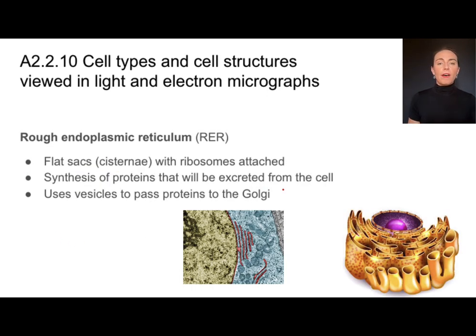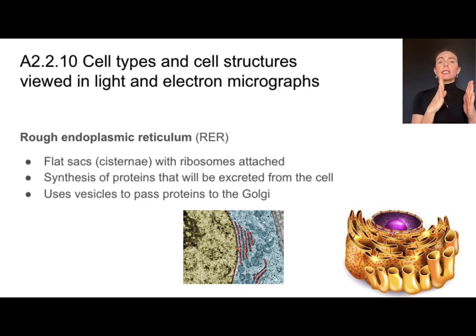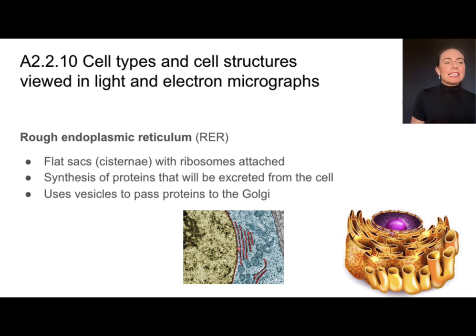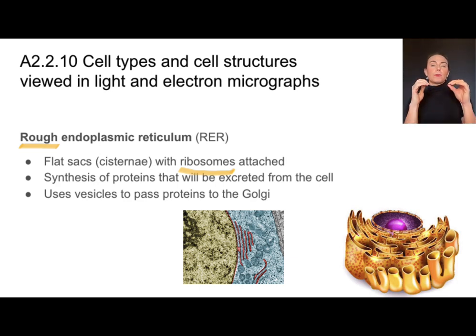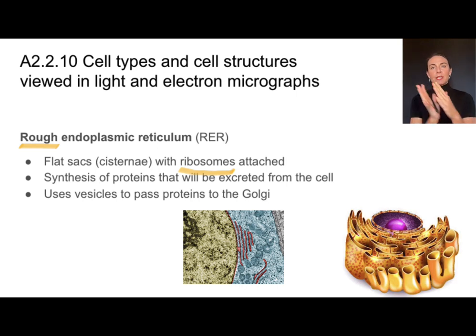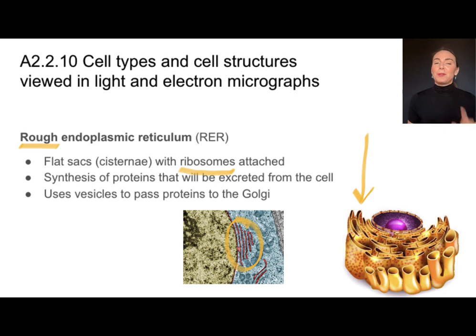Another organelle to look for is called the rough endoplasmic reticulum, or RER, and it's right here in this micrograph. We're generally going to find it connected to or near the nucleus. It's flat sacs with ribosomes attached, and it's these ribosomes that are kind of like bumps — that is why it is rough. This is going to be the site of protein synthesis for proteins that will eventually be excreted from the cell. The rough ER packages those proteins into vesicles and ships them to the Golgi, so sometimes we'll see vesicles near there. Look for those ribosomes.